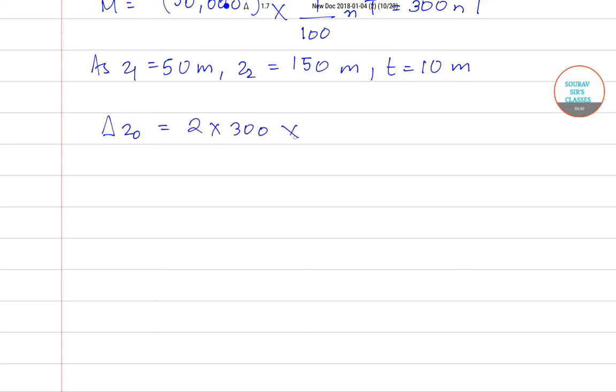This will be inside the bracket. So what will be the value of delta z naught? Delta z naught becomes, if you solve this, 80 nT. Now we have relation between apparent resistivity, magnetic field and electric field.